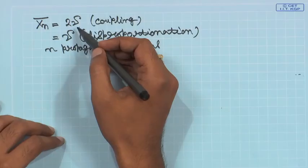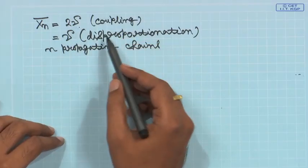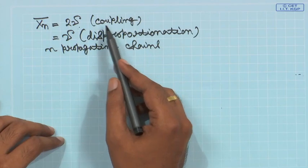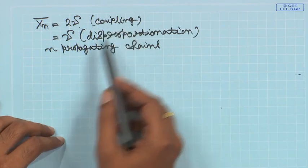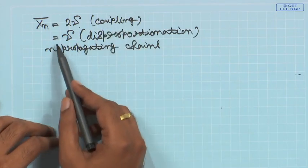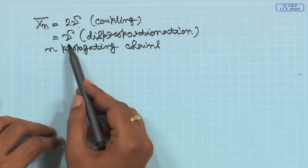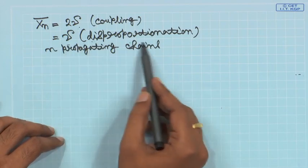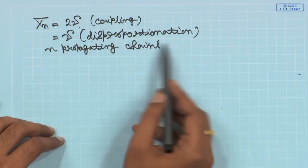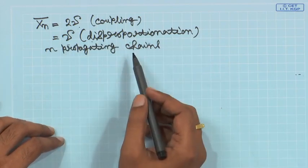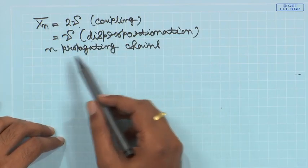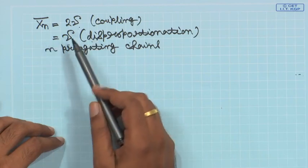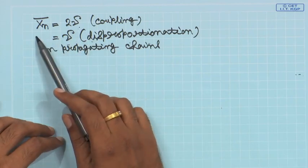We have X̄n, the number average degree of polymerization, equal to 2ν when termination occurs through 100% coupling, and X̄n equals ν when termination occurs through 100% disproportionation. Now we are trying to derive a general relationship of X̄n with ν.